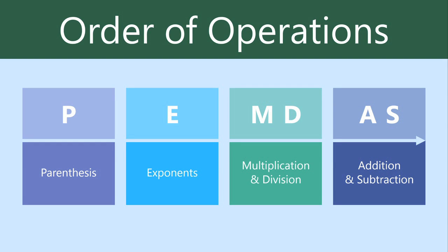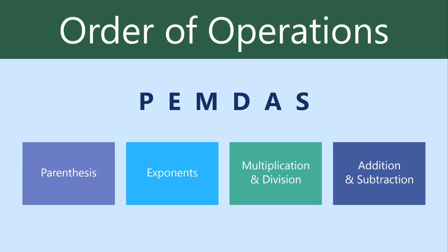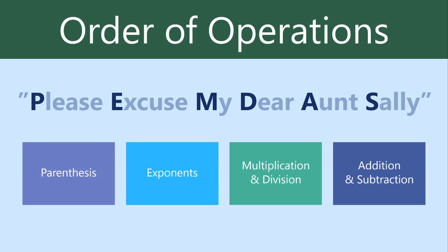Excel knows to use the Order of Operations whenever it calculates a complex formula. It's important that you remember it, so you can create formulas that'll give you the correct answer. To remember the order, you can just use the acronym PEMDAS. Or, to make it even easier, remember the phrase, please excuse my dear Aunt Sally.